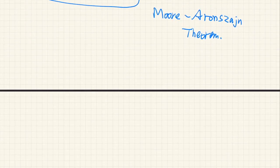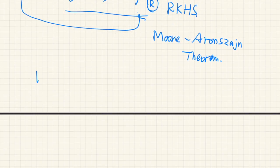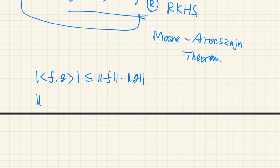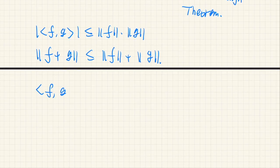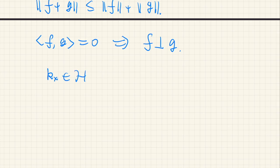In a reproducing kernel Hilbert space, we always have the Cauchy-Schwarz inequality and the triangle inequality: ‖f + g‖ ≤ ‖f‖ + ‖g‖. We can also introduce orthogonality between functions: if ⟨f, g⟩ = 0, then f and g are orthogonal. The reproducing kernel k_x is also a function on X, so k_x(y) can be expressed as ⟨k_x, k_y⟩ in this reproducing kernel Hilbert space.